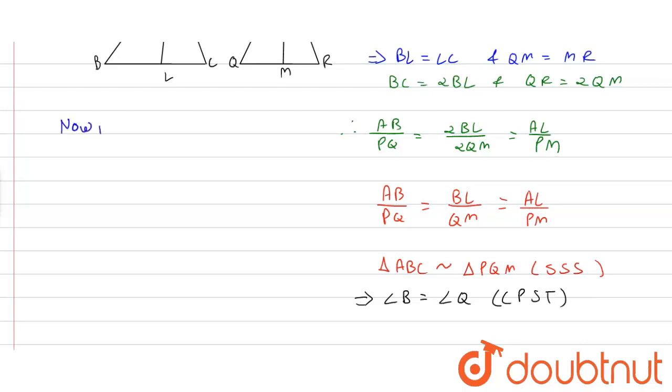Now in triangle ABC and triangle PQR we have AB upon PQ is equal to BC upon QR and angle B is equal to angle Q.